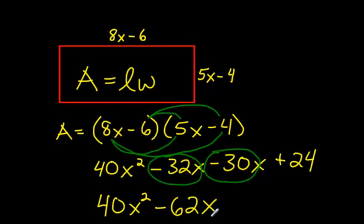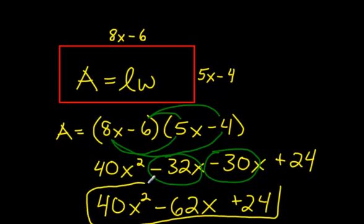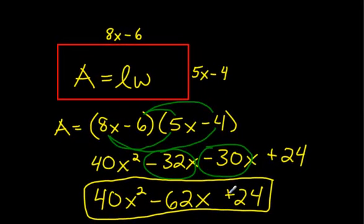Negative 62X. And then plus 24 on the end. And we are done. That's all you have to know in this unit, is how to do this stuff. Practice this at the Khan Academy. Practice this on the online practice questions. And practice this on the worksheet. And you'll totally know how to do this stuff. I'm sure you'll be fine. Good luck.